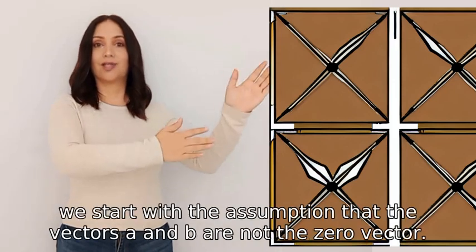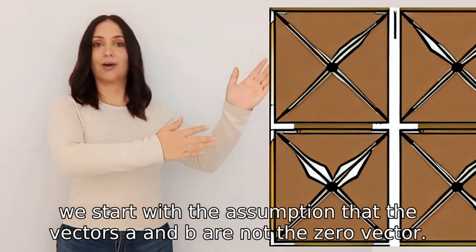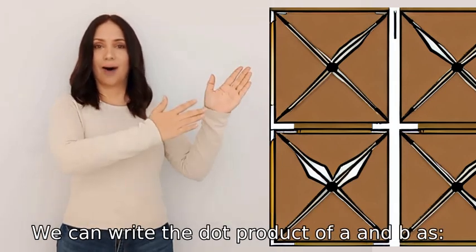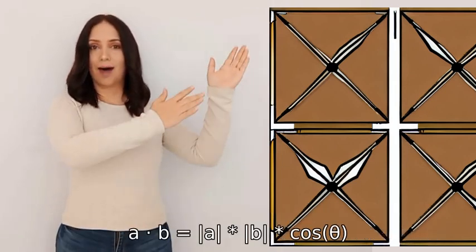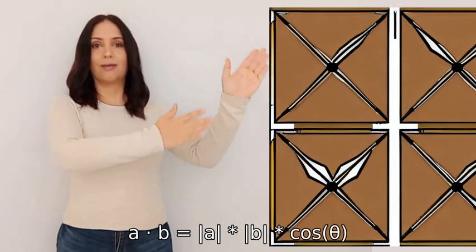To derive this formula, we start with the assumption that the vectors a and b are not the zero vector. We can write the dot product of a and b as a · b = |a| * |b| * cos(θ), where